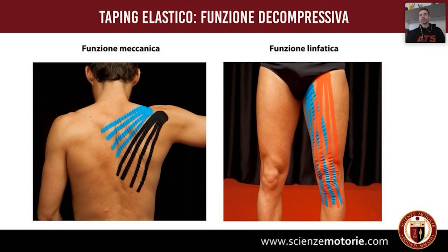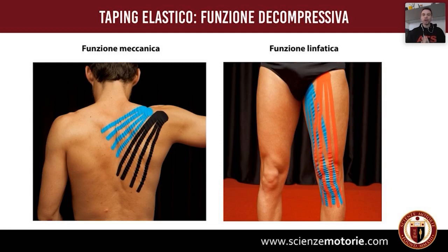Cosa significa meccanica? Cosa significa drenante o linfatica? Meccanica significa esattamente quello che si vede nella slide: il sollevamento della cute, facendo quelle pieghe cosiddette convoluzioni. Il nastro, essendo applicato sulla cute, farà delle convoluzioni. L'effetto meccanico ricrea queste convoluzioni con un'adesione totale della colla sulla cute, sollevando la cute e creando uno spazio al di sotto.